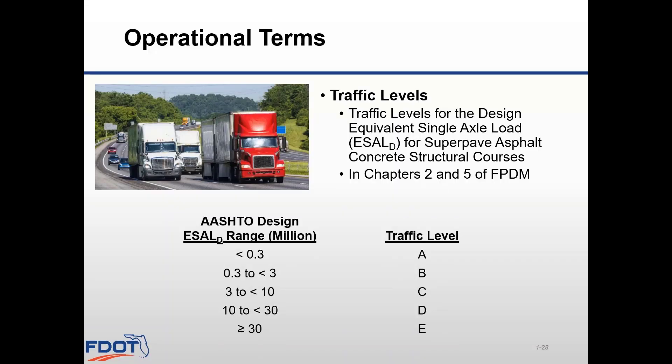Now that we know all about ESALs, let's take a quick look at traffic levels, which are based on the design ESALs for our project. You can find this information in a couple of places in the flexible manual: first shown in Chapter 2, section 2.2.1, which discusses the AASHTO design equation and its variables, and also repeated in Chapter 5, section 5.6.5, titled traffic levels.